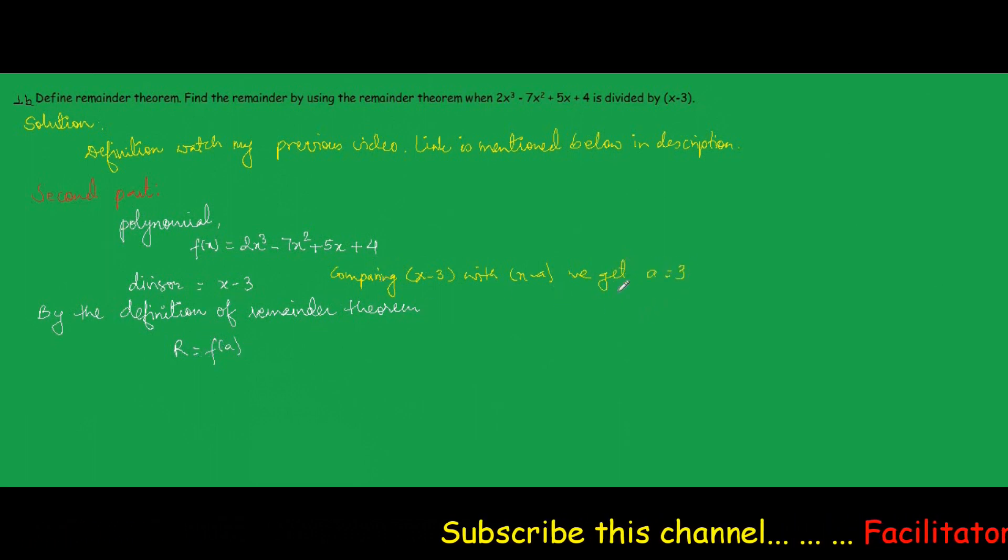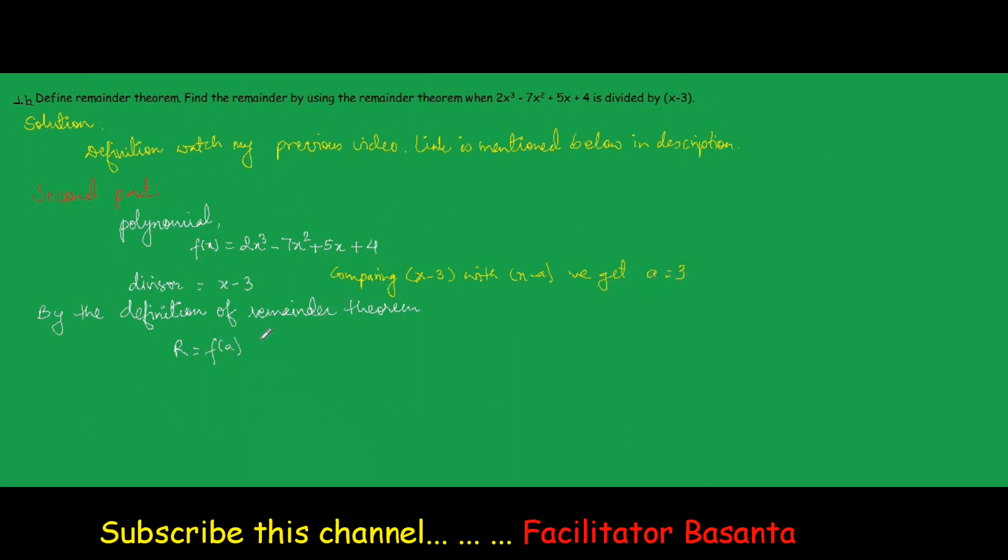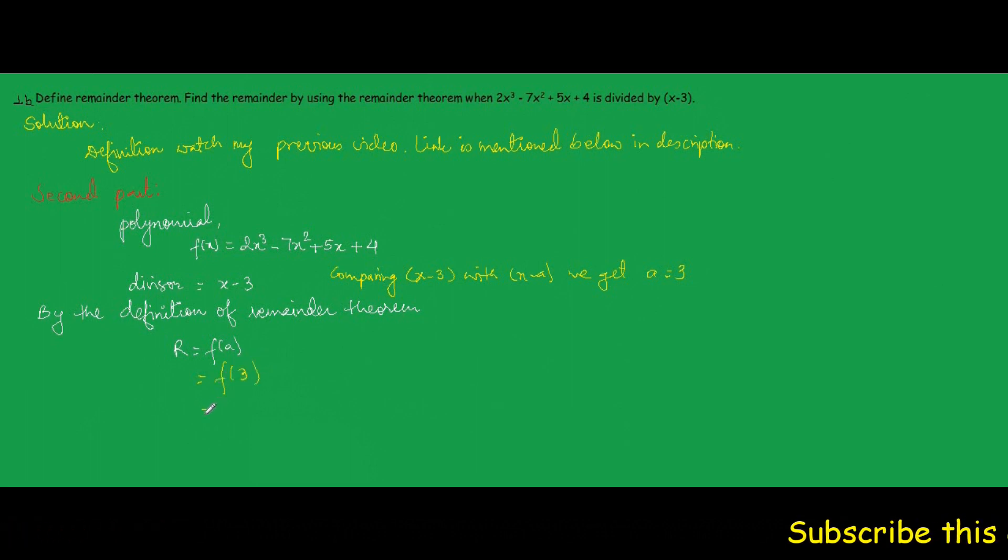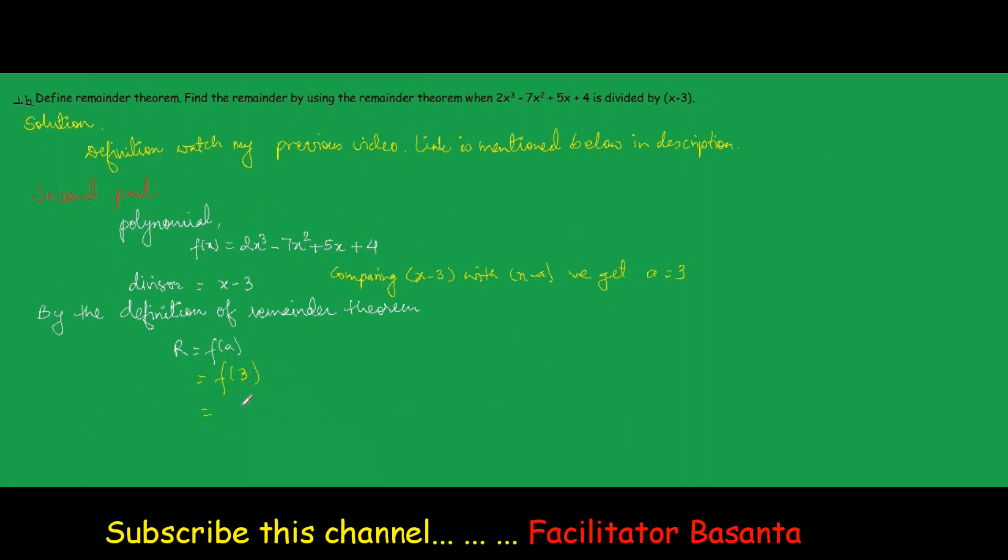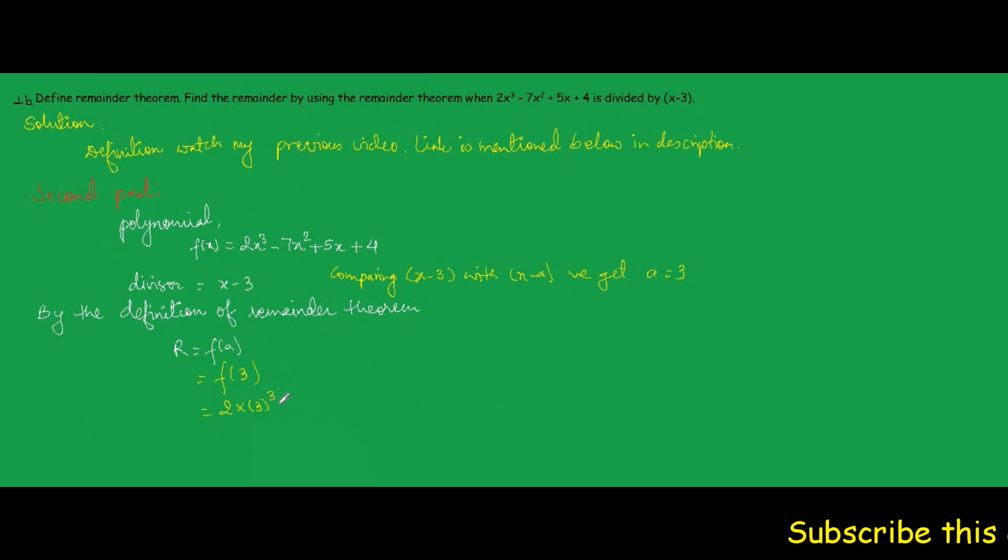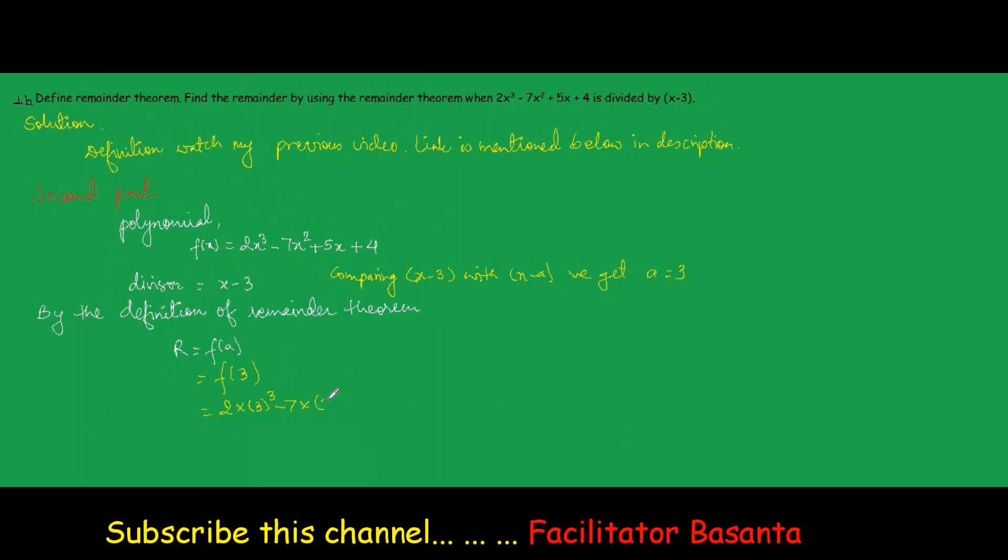And then, we substitute the value of a in this expression. r = f(3). Now we substitute the value of 3 in this polynomial. It is 2(3³) - 7(3²) + 5(3) + 4.